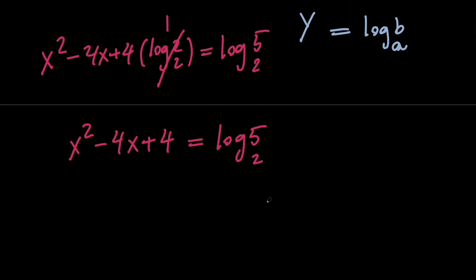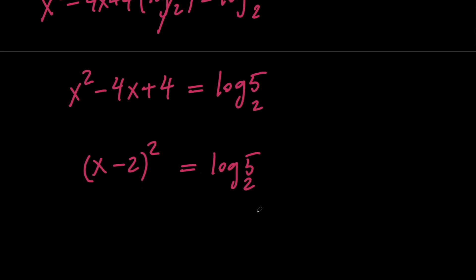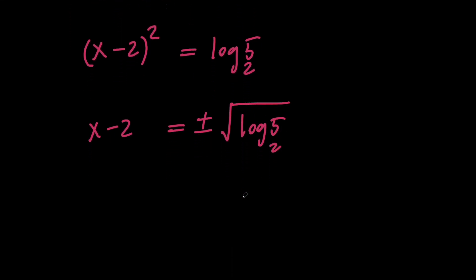Now at this point, one of the things we could do is move everything to the same side to form a quadratic equation and use the quadratic formula. But instead, I'm going to use the fact that the expression on the left-hand side is a perfect square — it equals the quantity x minus 2 squared. From this, we take the square root of both sides to get x minus 2 equals plus or minus the square root of log base 2 of 5. Then adding 2 to both sides gives x equals 2 plus or minus the square root of log base 2 of 5.